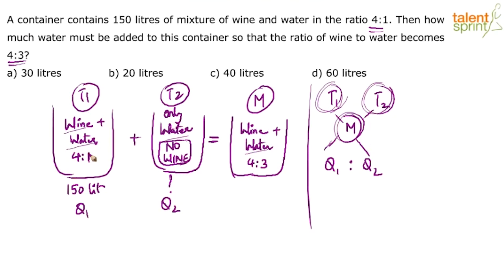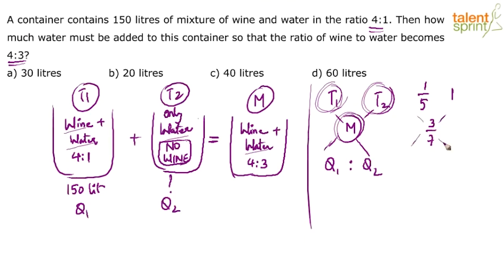What is the concentration of water in type 1? Water is only 1 part out of 5 parts, so it is 1 by 5. In type 2, it's only pure water, so the whole unit is water — 1 out of 1, which is 1. And in the final mixture, how much is water? 3 out of 7, so 3 by 7. I know this is lengthy, but you have to know this process. I will explain the smarter method immediately after this, but let's understand this first.